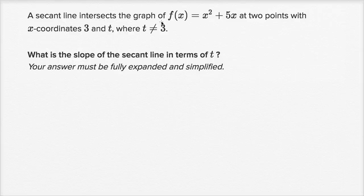A secant line intersects the graph of f(x) = x² + 5x at two points with x coordinates 3 and t, where t does not equal 3. What is the slope of the secant line in terms of t? Your answer must be fully expanded and simplified.